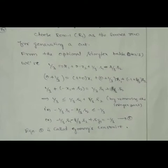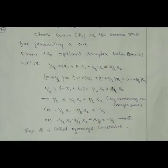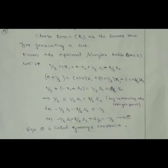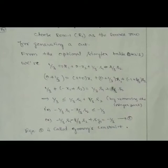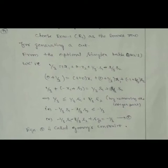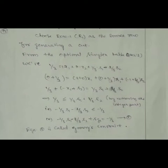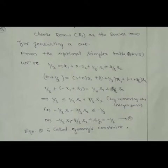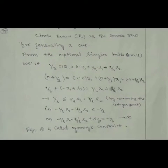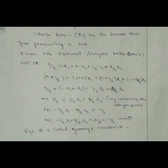We choose r1 as the source row for generating a cut from the optimal simplex table. We have 1/3 equal to 1·x1 plus 0·x2 plus (1/3)·s1 minus (2/3)·s2. Expressing each coefficient as the sum of an integer part plus a positive fractional part, the equation becomes: 0 + 1/3 = (1+0)x1 + (0+1/3)s1 + (−1+1/3)s2. Taking all integer parts to the left-hand side and removing them, we get the Gomory's Cut: 1/3 ≤ (1/3)s1 + (1/3)s2.